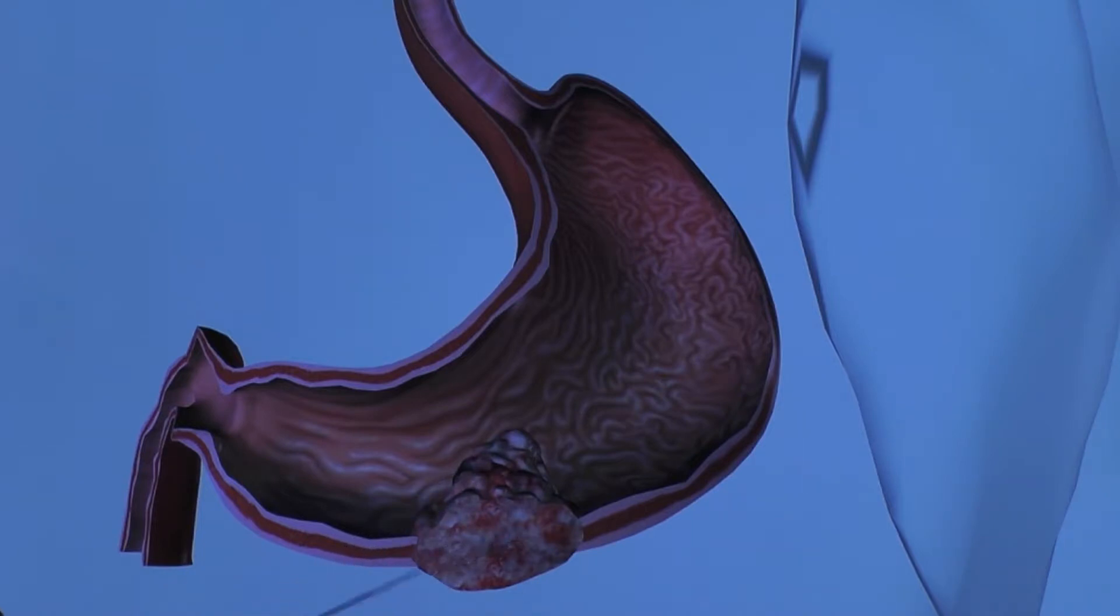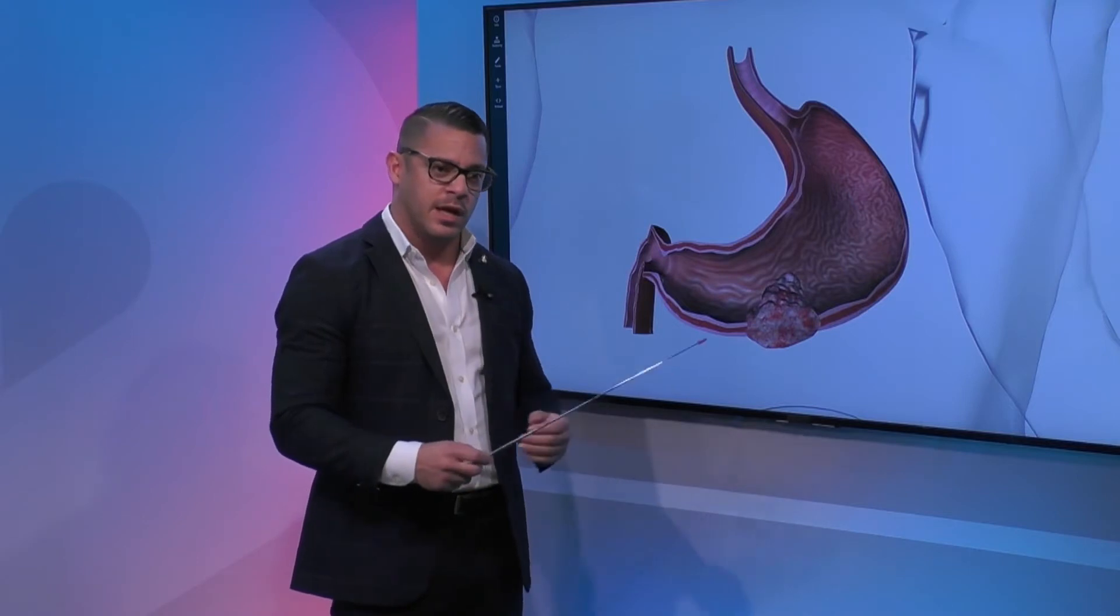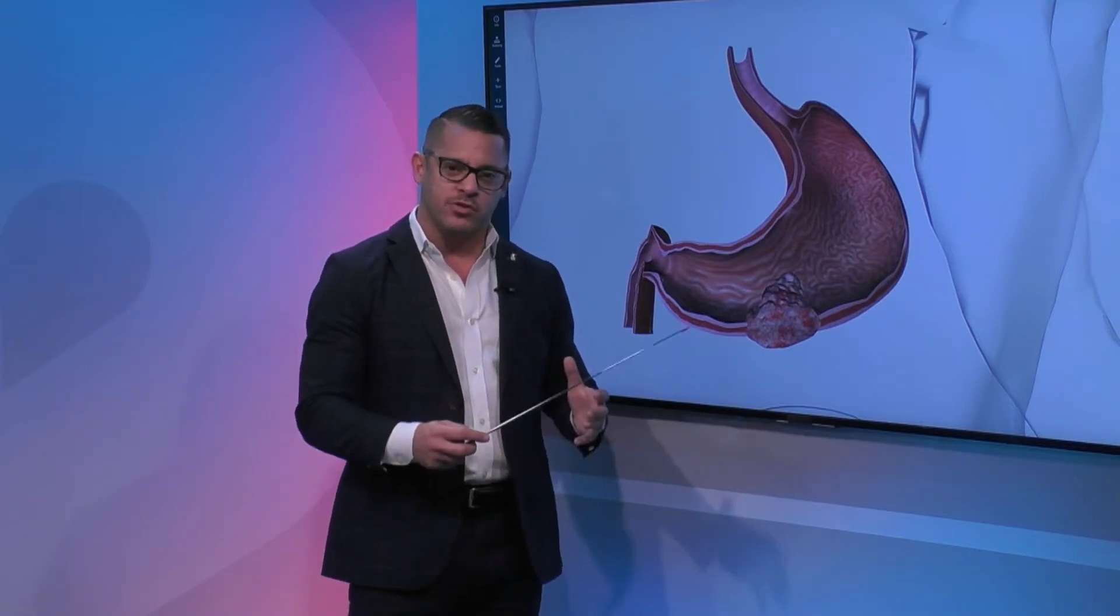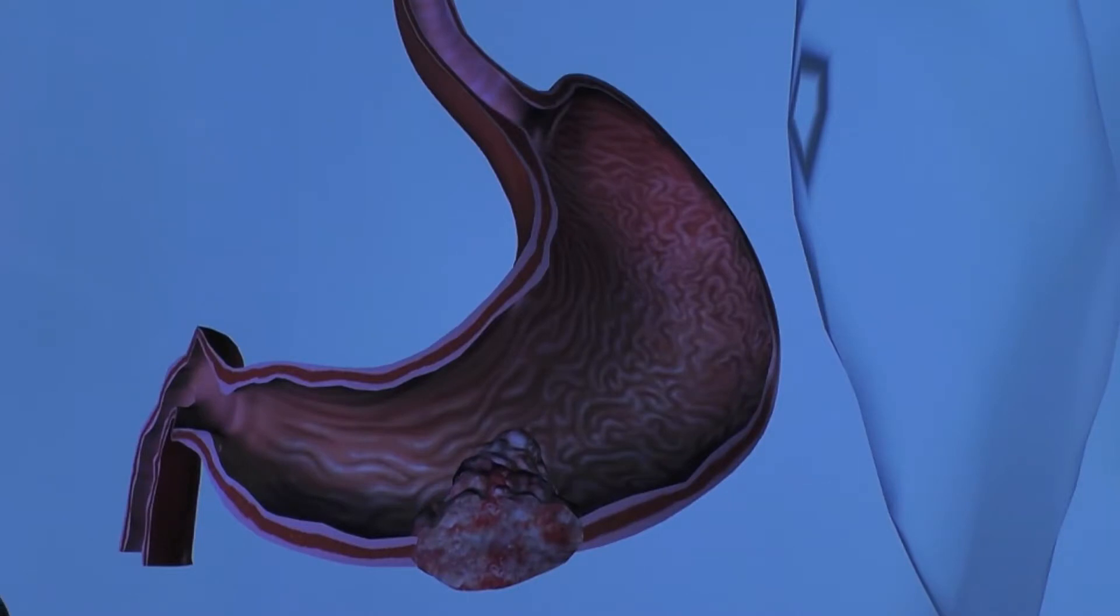All tumors we talk about staging and basically there's three portions of the staging. There's the T stage which is T for tumor, and really it's not about how big the tumor is, it's more about how superficial or how deep it penetrates through the wall of the stomach. So the higher the T stage, the more advanced.